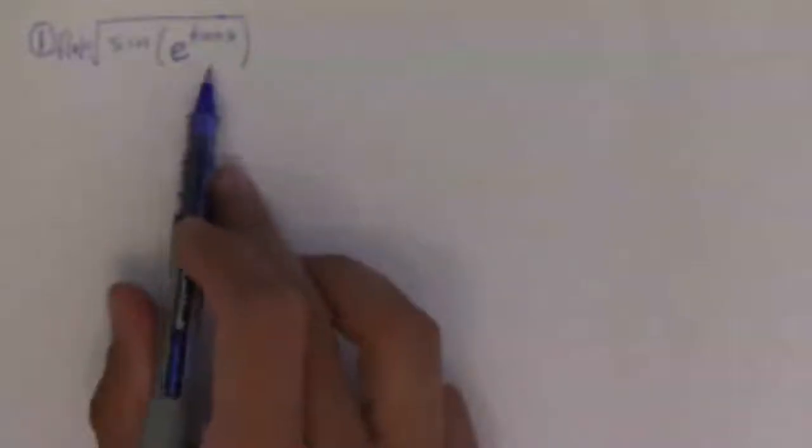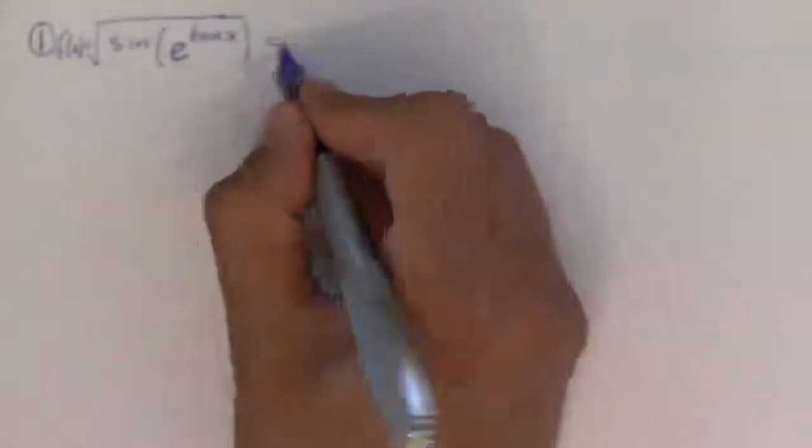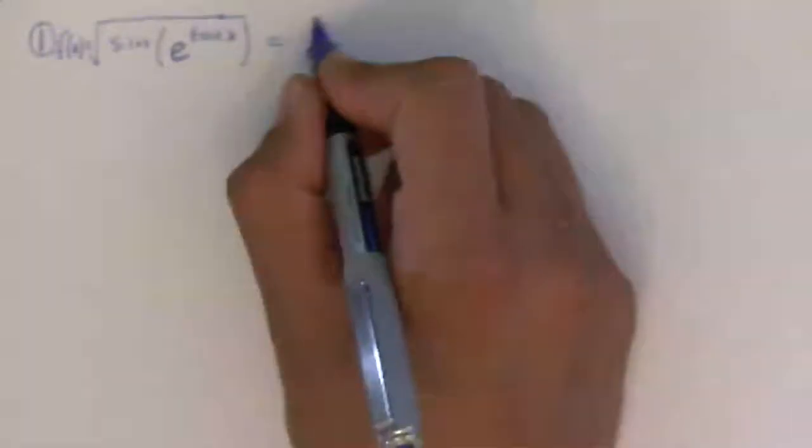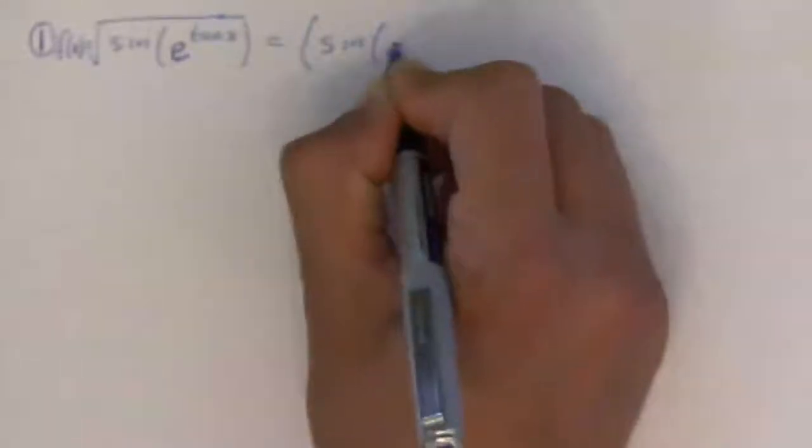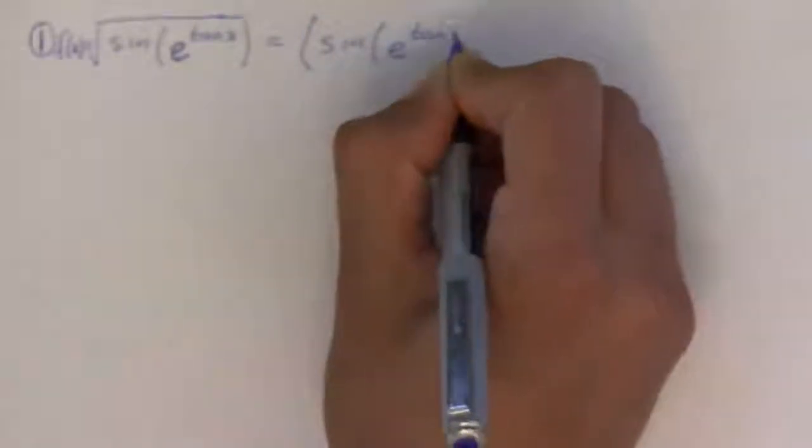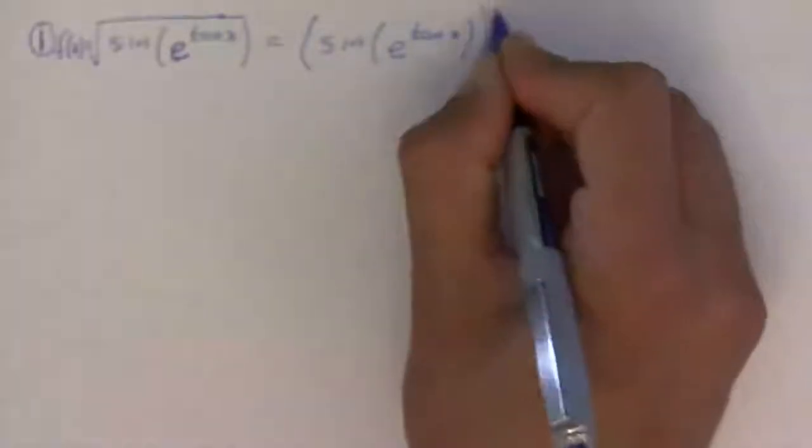Now, my first insane madness problem is not that difficult, but it does have some tricky spots. So, the very first thing I want to do is always change the root to an exponent. So, I'm going to have sine of e raised to the tangent of x to the 1 half. Now, if you can get through this entire worksheet, the insane madness problems, you can get the derivative of just about anything.